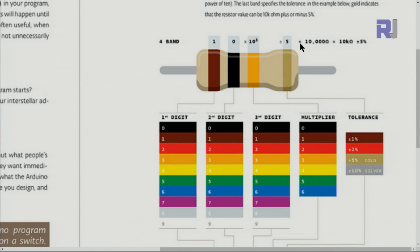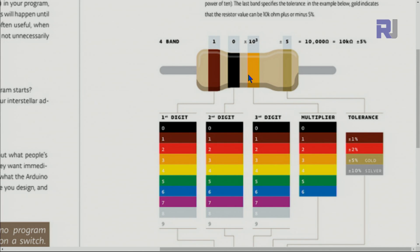The last band is usually gold or silver, indicating tolerance. Gold means plus or minus five percent, silver means ten percent. If there is extra space before the last band, you read from the other side. For one mega-ohm, you need six zeros: the color green represents five, so you would have green followed by six — that gives one mega-ohm.